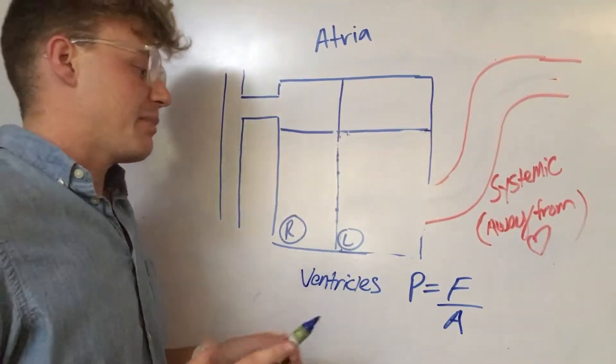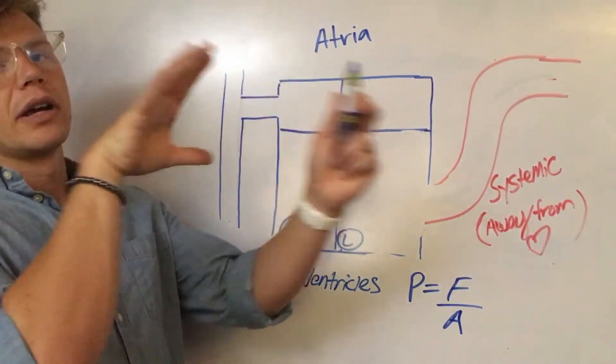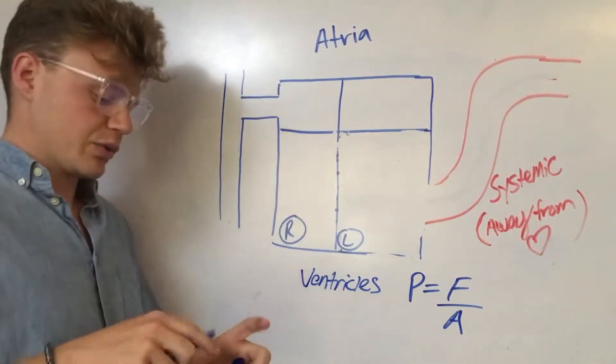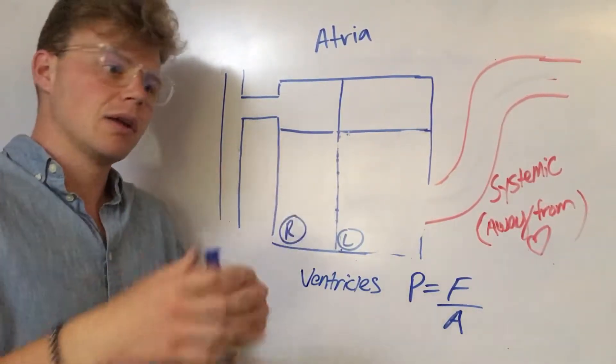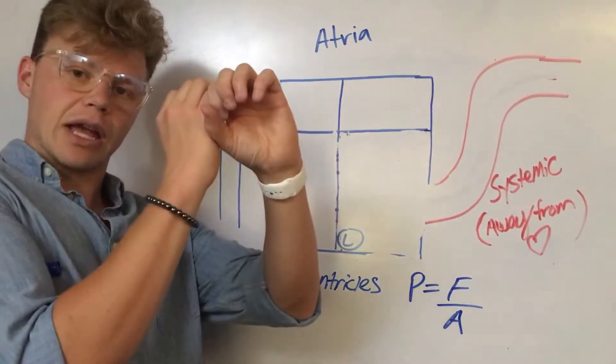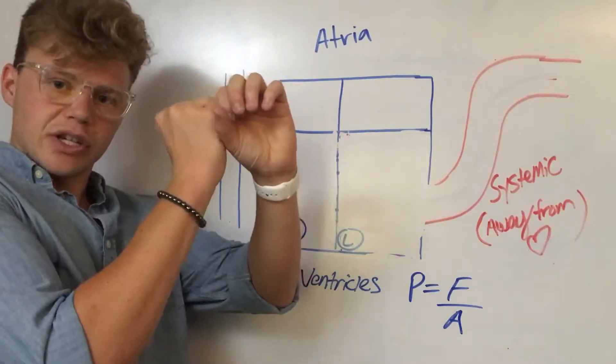One of the biggest things that happens has to do with your cross-sectional area of your arteries. So think about it this way. If you have a pump, you're pumping and you have a hose on the other end, and you're in a normal situation, this is great. You're pumping. You've got a pretty good cross-sectional area right here.